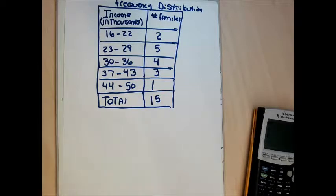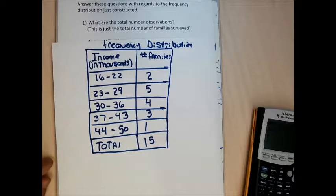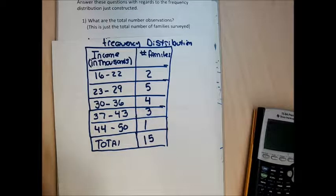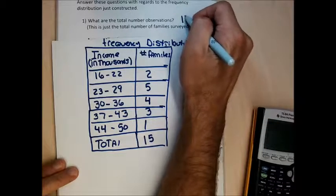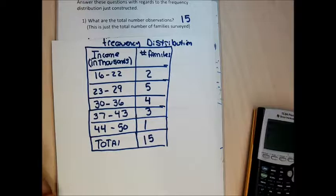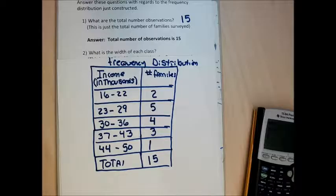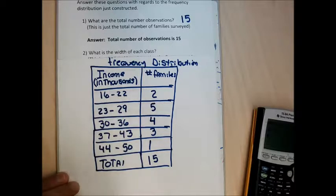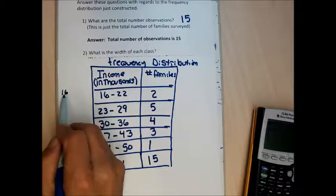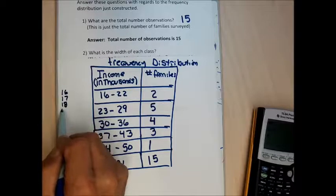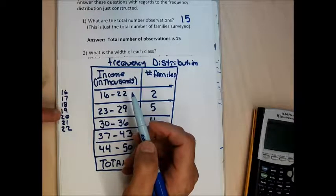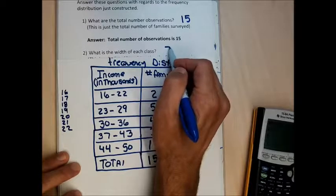Now I need to answer questions about this frequency distribution. First question: what is the total number of observations? That's just the number of families surveyed — 15. The next question asks for the width of each class. It feels like 6 because I added 6 to get from class to class, but that's not right. Looking at the class 16 to 22, I can put in 16, 17, 18, 19, 20, 21, and 22 — that's 7 different numbers, so the width is 7.